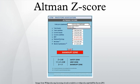For private firms, the Z-score uses: T1 = working capital / total assets, T2 = retained earnings / total assets, T3 = earnings before interest and taxes / total assets, T4 = book value of equity / total liabilities, T5 = sales / total assets. The model is: Z = 0.718·T1 + 0.847·T2 + 3.107·T3 + 0.420·T4 + 0.998·T5. Zones of discrimination: Z > 2.9 is the safe zone; 1.23 ≤ Z ≤ 2.9 is the grey zone; Z < 1.23 is the distress zone.